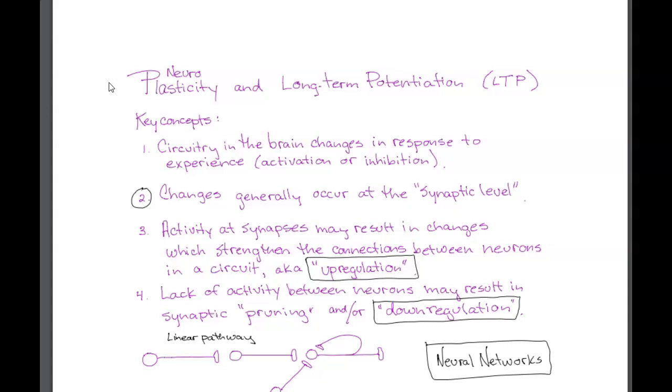We want to look at that specifically in some of the circuits we're going to be talking about, for example, learning and memory, and talk about this thing we know as long-term potentiation, or LTP. Here are some key concepts about how the circuitry in the brain changes through experience, and these changes are seen at the synaptic level.